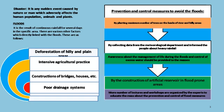Prevention and control is an important part in order to avoid floods, as we have lost many lives during floods over many years. The first prevention measure is by planting the maximum number of trees on the banks of rivers and hill areas. The second is by collecting data from the meteorological department and informing people about heavy rainfall.